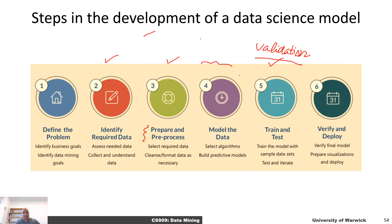Once that is done and we are satisfied that the machine learning model is working correctly, after verification, we go ahead and deploy it. So if you want to make an AI that takes a look at a picture or a painting and identifies who the artist is, these are the steps that you would need to follow.